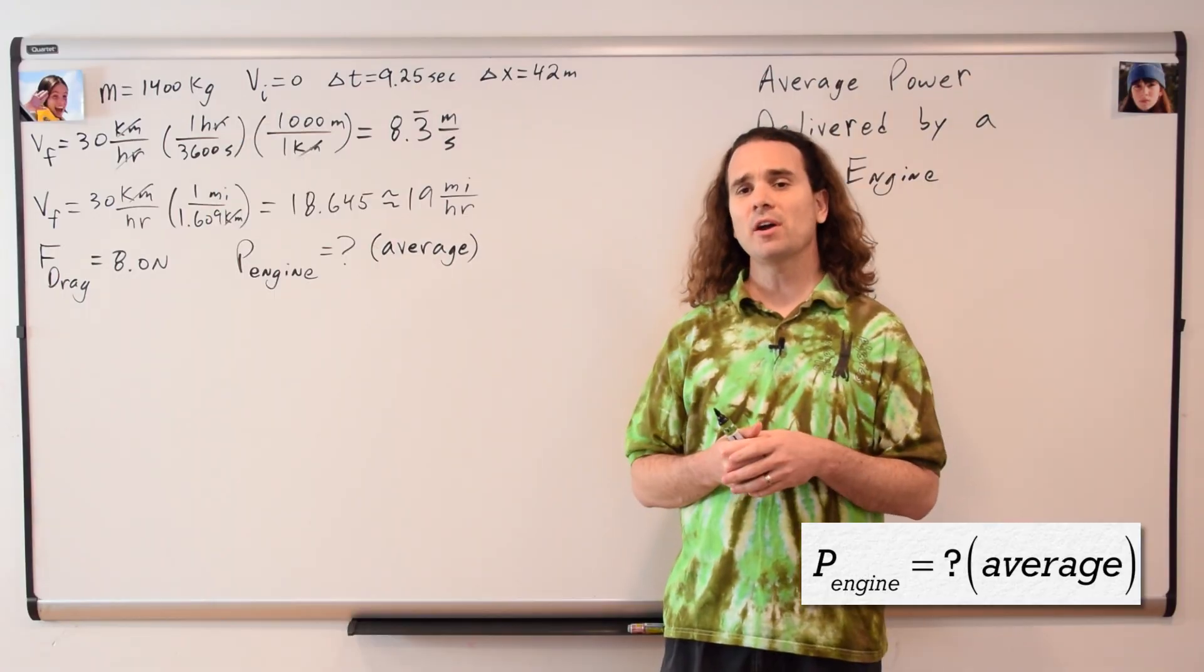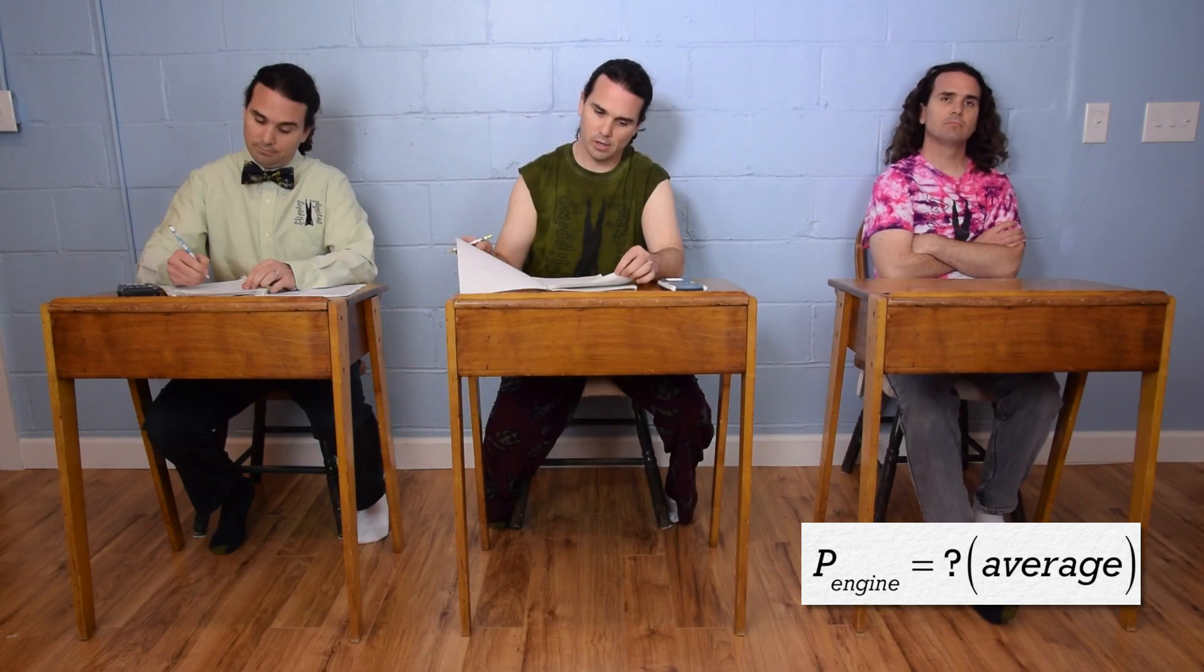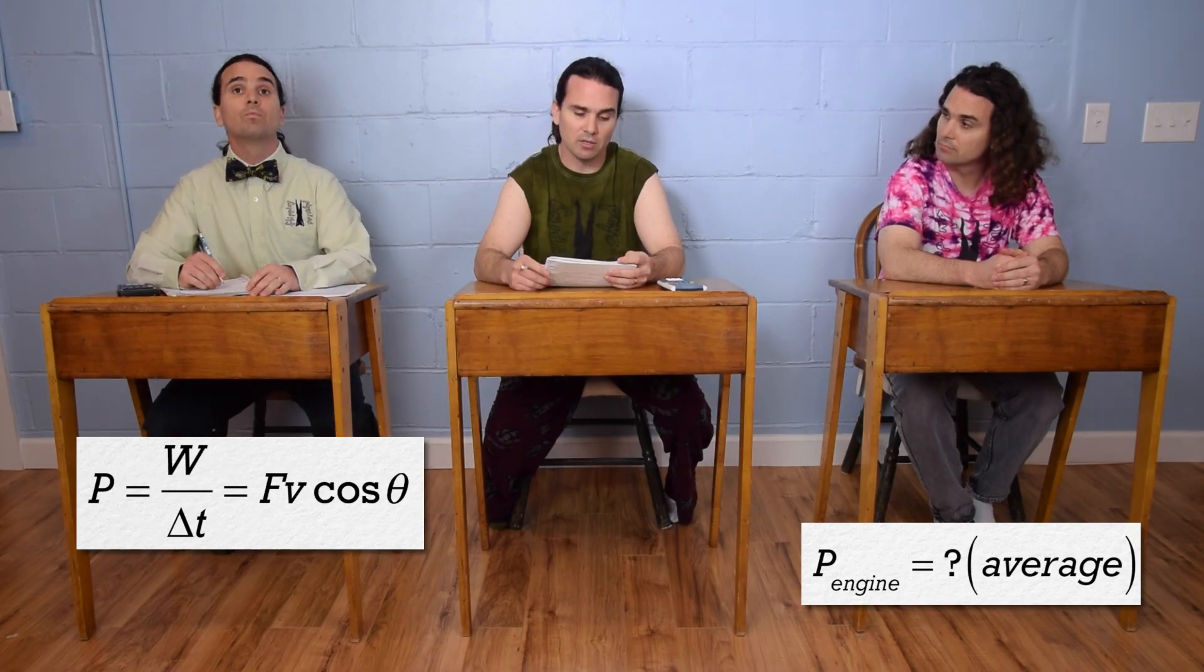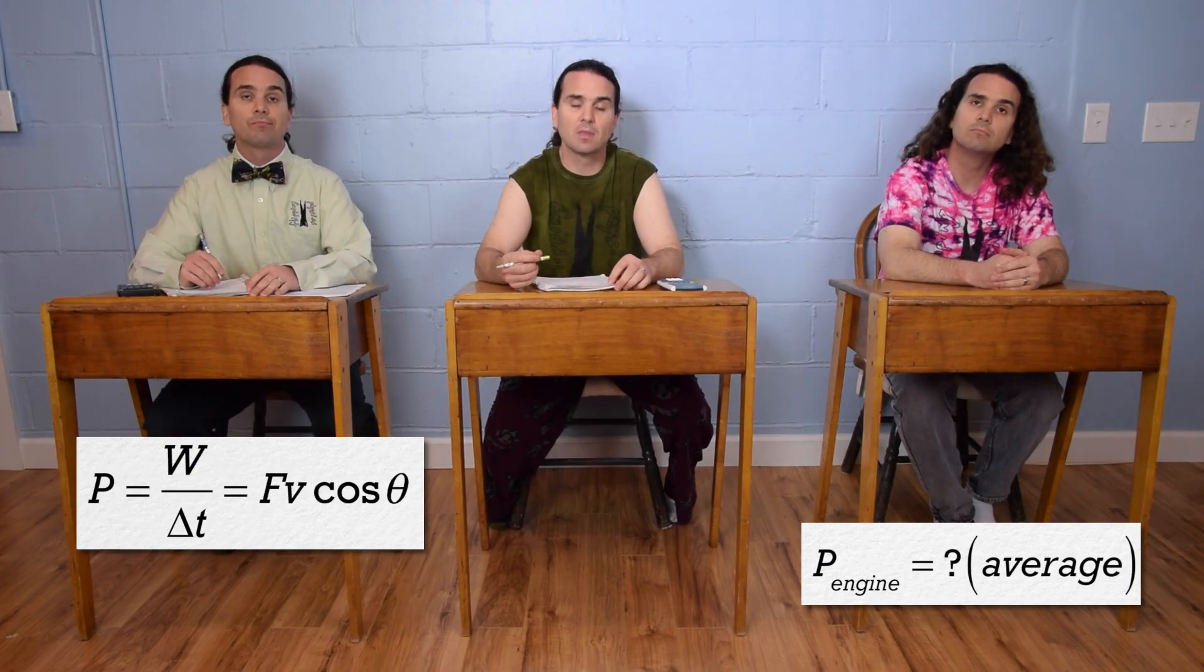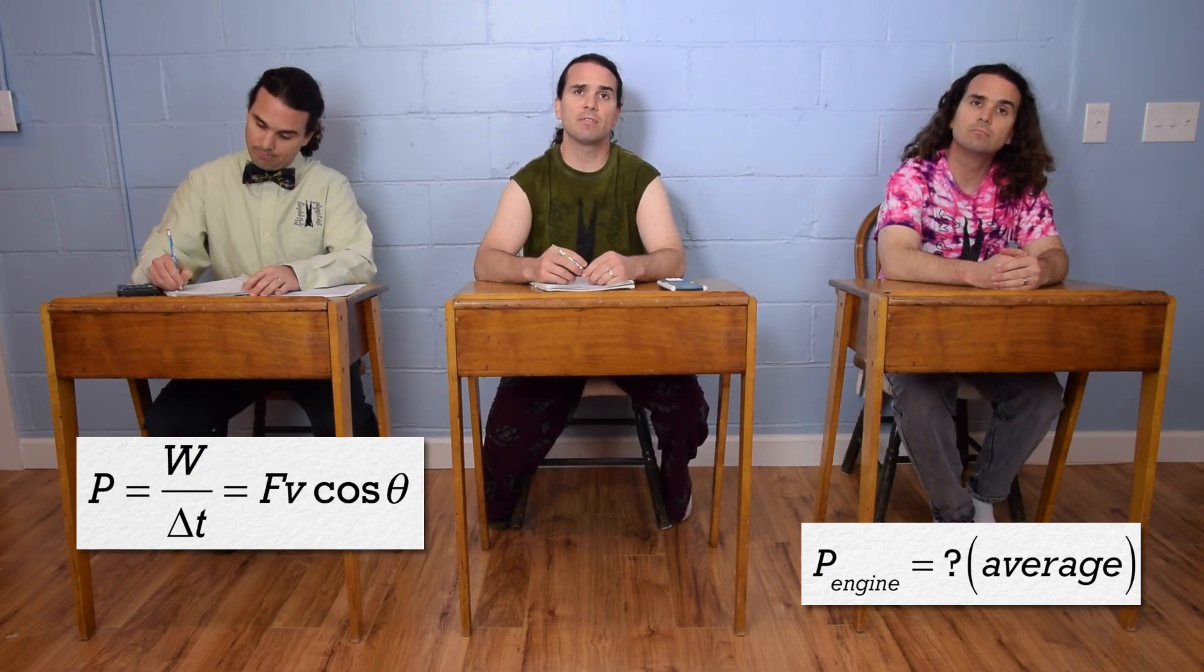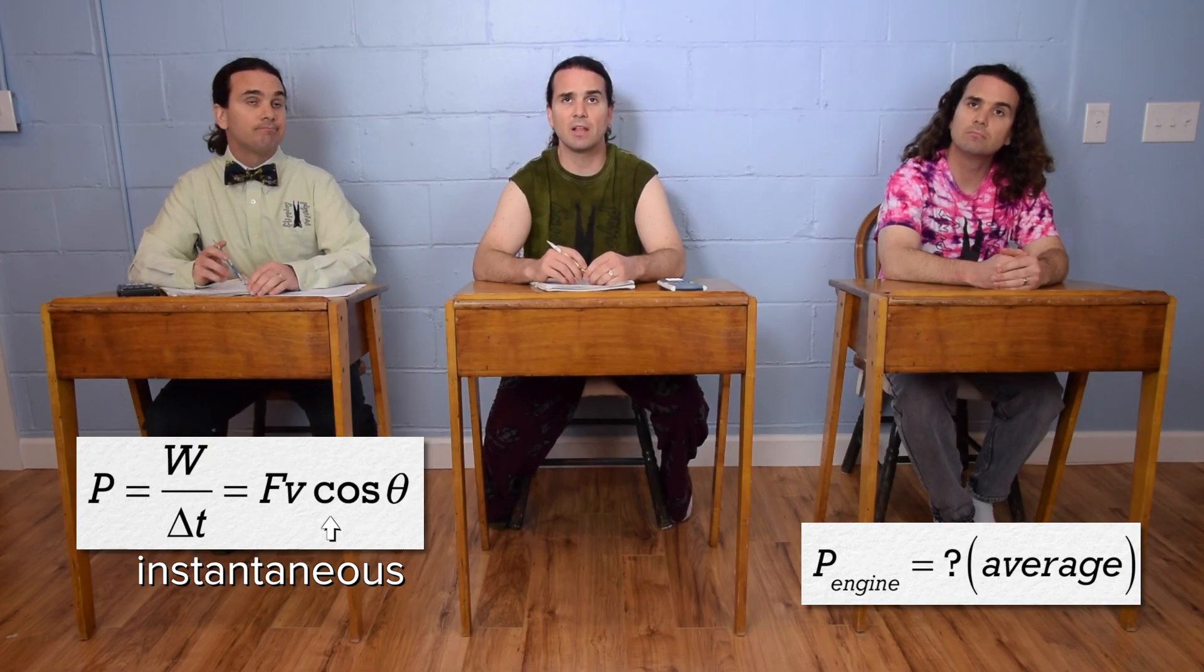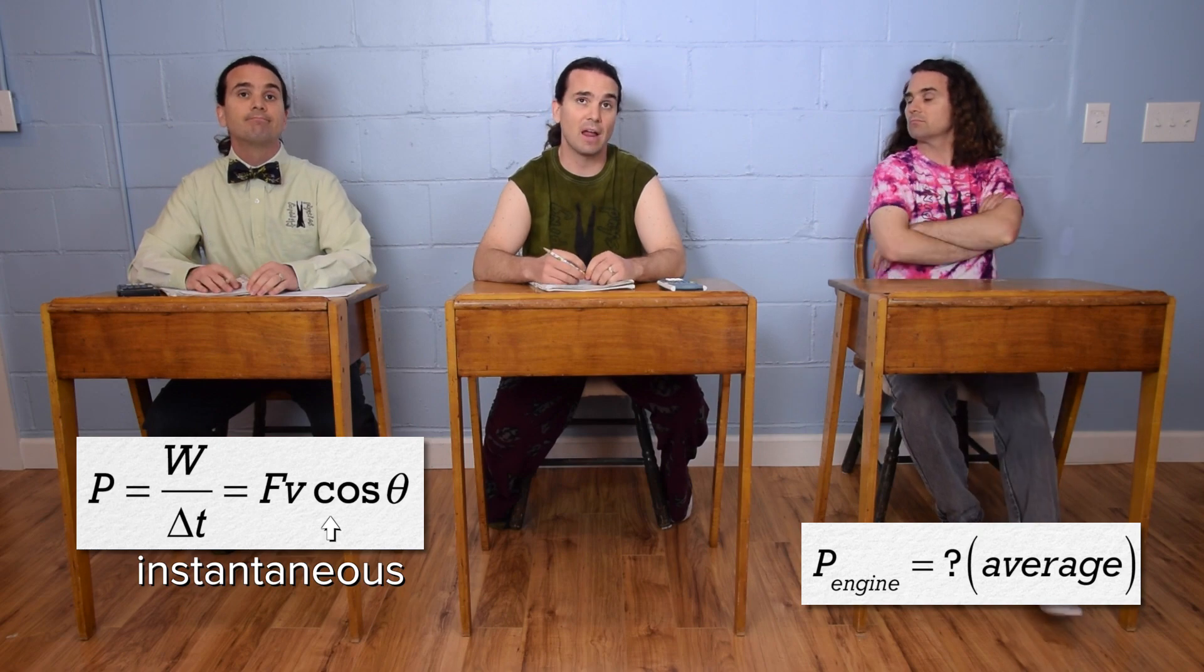Bobby, what are the two equations for power and which can we use in this problem? Power equals work divided by change in time and power also equals force times velocity times cosine theta. If we were solving for instantaneous power, we would need to use power equals force times velocity times cosine theta. However, because we are solving for average power, we can use either equation.